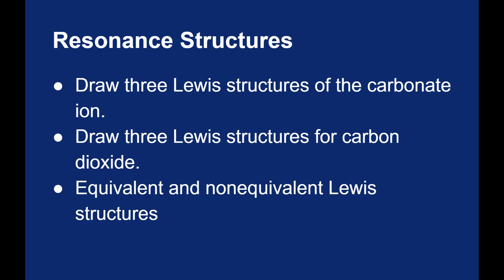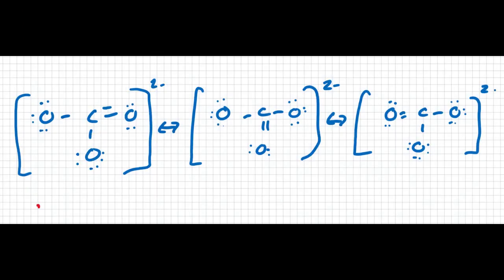Let me show you a couple of examples. Let's look at the Lewis structures we've already drawn — the carbonate ion and carbon dioxide. Starting with the carbon atom in the middle of carbonate: carbon normally has four valence electrons. In the carbonate ion there are two single bonds and one double bond. Since formal charge assigns one electron per bond, that's one from each single bond and two from the double bond — four electrons total. So four minus four gives carbon a formal charge of zero.